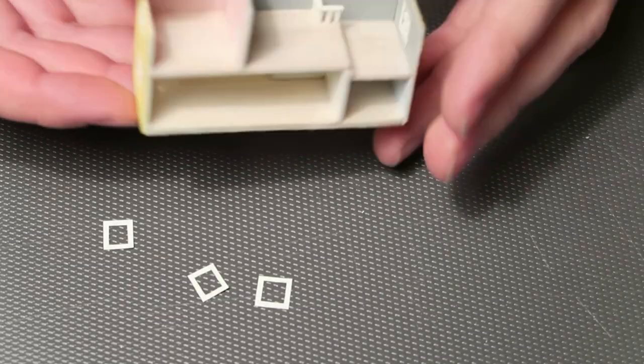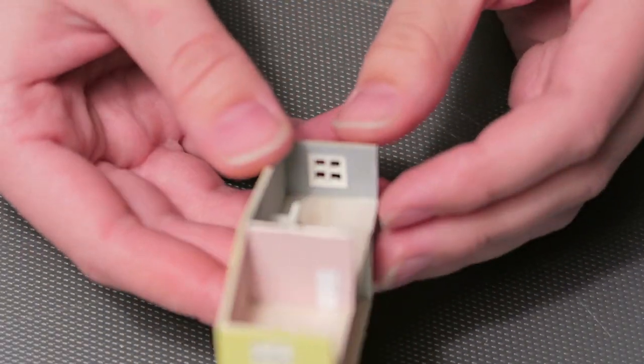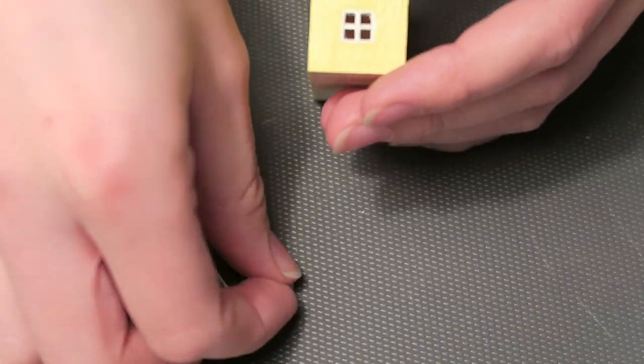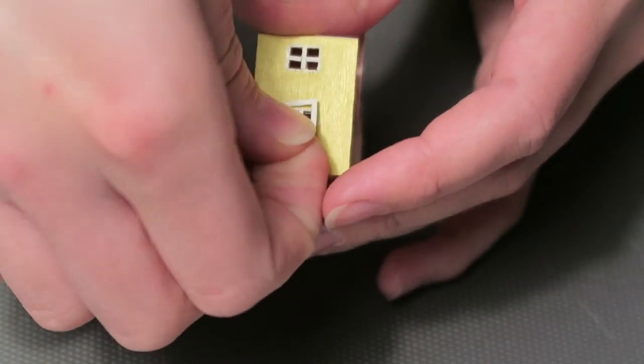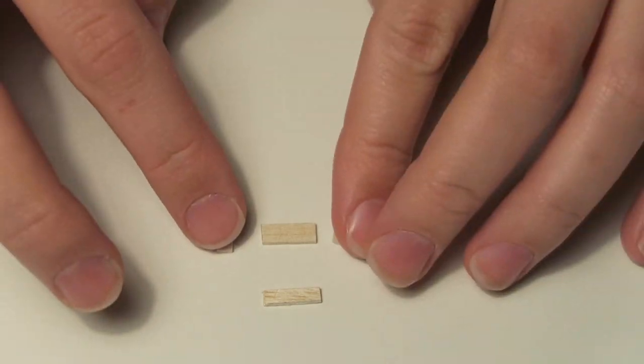I cut out some paper frames for the windows and glued them down with a glue stick. I did this to both the inside and the outside of the windows to make it more cohesive and give it a nicer finish.